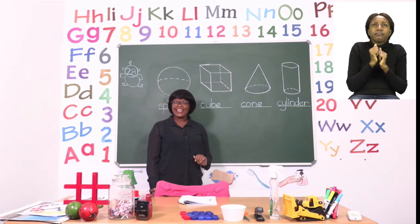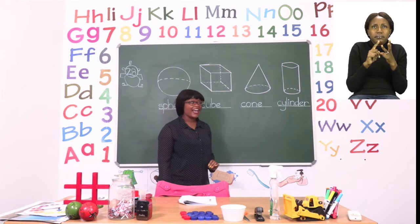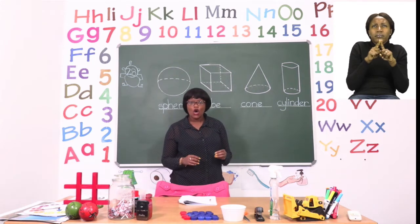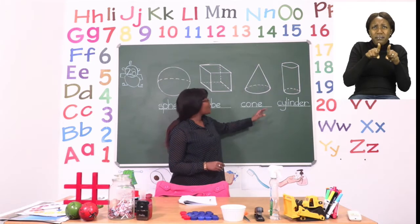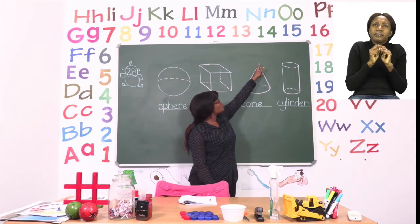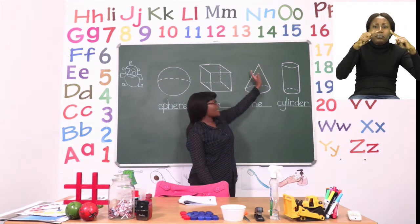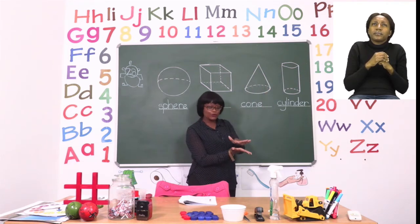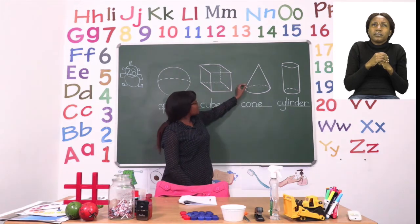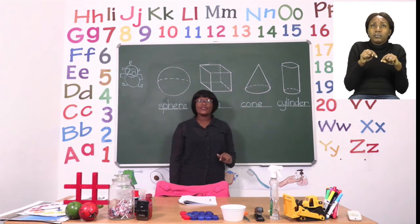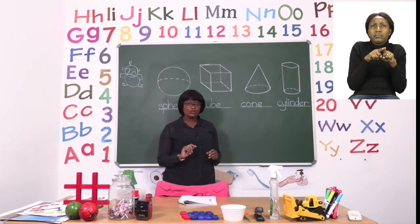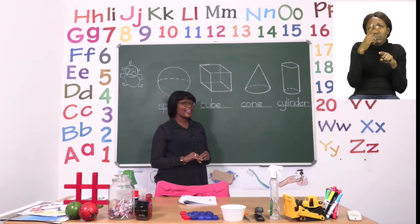The next 3D shape that we have is a cone — c-c-c-cone. A cone has a pointed top and a round bottom which is also flat. When looking for things in your books, take a good look at all the things that can look like a cone.